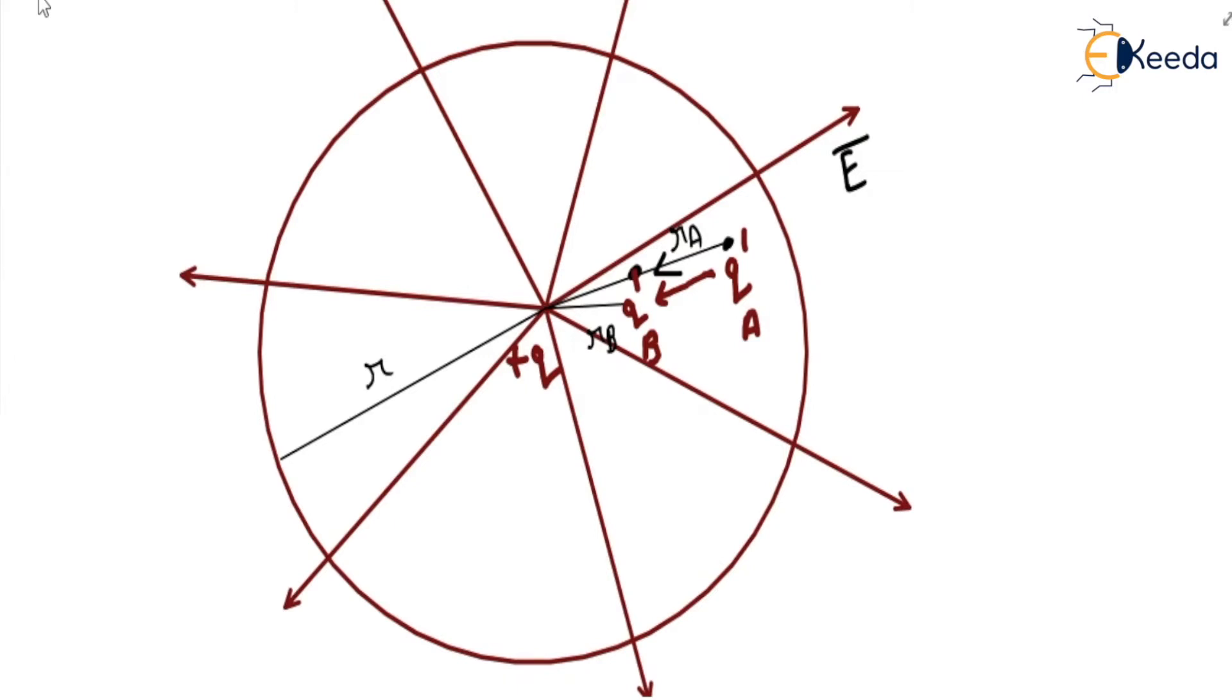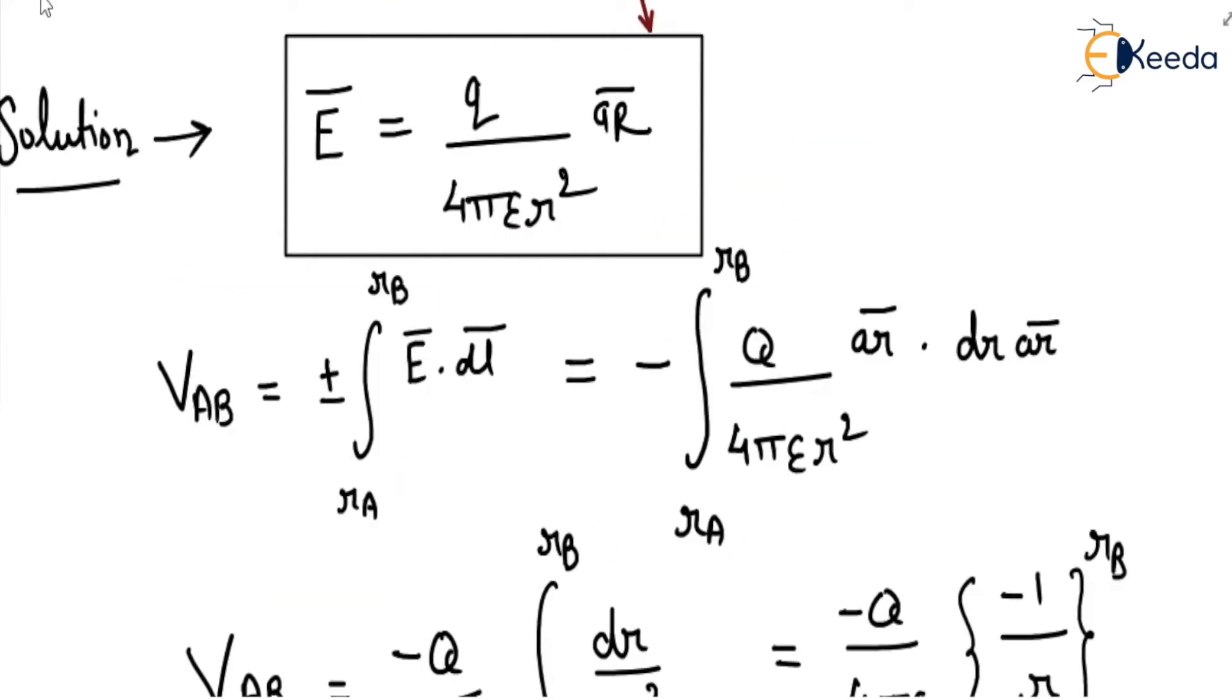From point A to point B. At point A, the distance from the origin is rA, and at point B, the distance from the origin is rB. Let me start the solution for this question. The electric field we know is q/(4πε₀r²) âr.